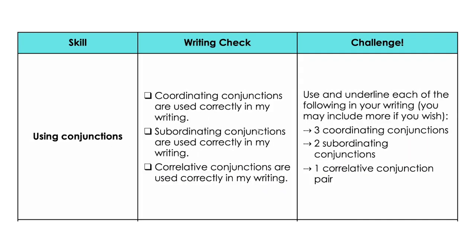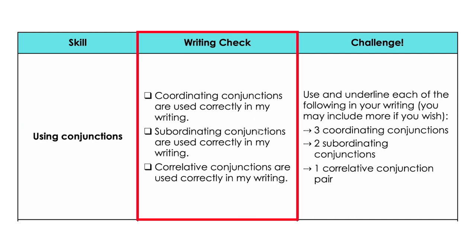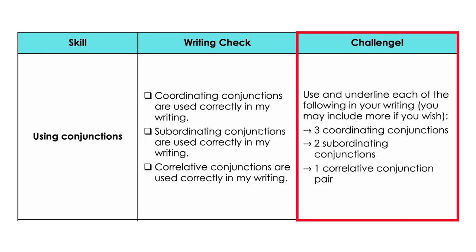Application to writing looks like this: if we're focusing on a skill like using conjunctions, we share this writing check with students. Are my coordinating conjunctions used correctly in my writing? They check that off. Are subordinating conjunctions used correctly? Et cetera. For students who want a challenge, we ask them to use and underline each of the following in their writing — they can include more if they want to. This makes differentiation easy. Importantly, we're being hyper-focused on a specific skill we just taught, and then throughout the year we build in spiral review of these concepts.